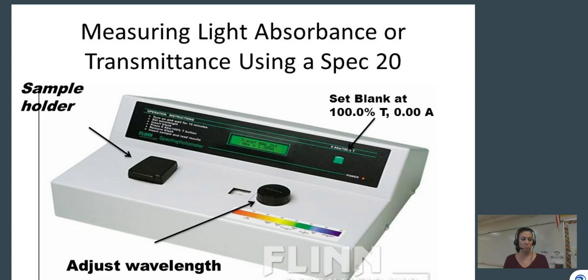Blanking sets the machine to 100% transmittance for that cuvette, or zero absorption. Remember: if all the light is going through, 100% is being transmitted, which means zero light is being absorbed.